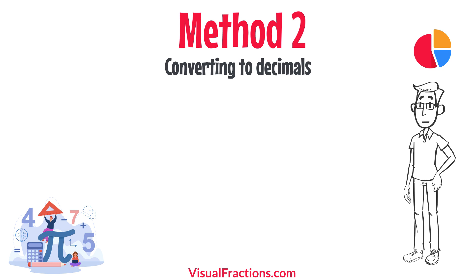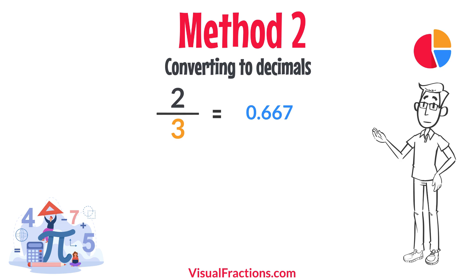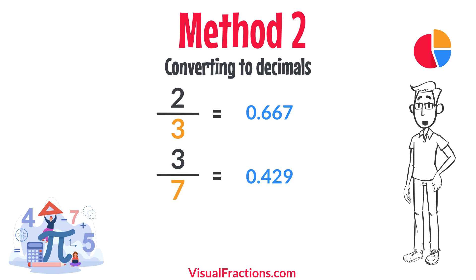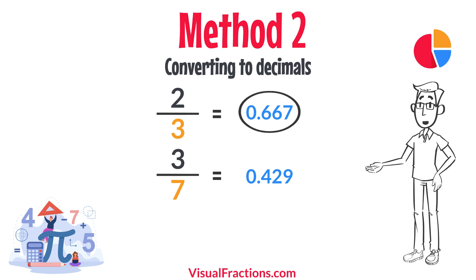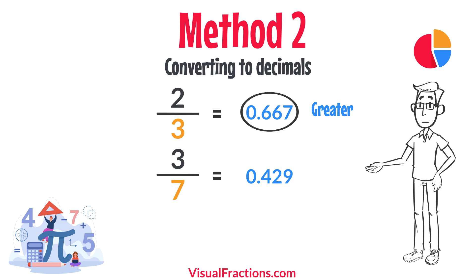For a second method, let's convert each fraction to a decimal. Using a calculator, divide two by three to get approximately 0.667, and divide three by seven to get approximately 0.429. This calculation shows that 0.667 is greater than 0.429, confirming that two-thirds is indeed greater than three-sevenths.